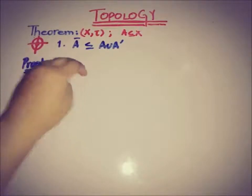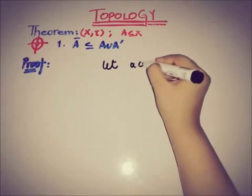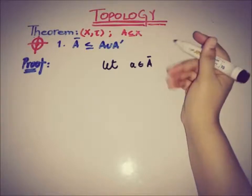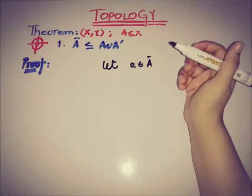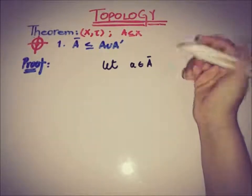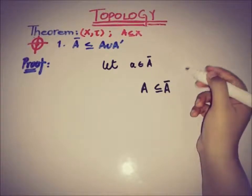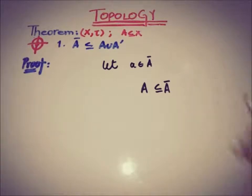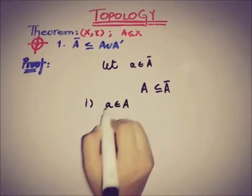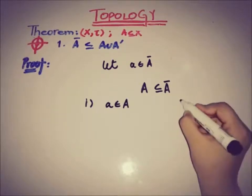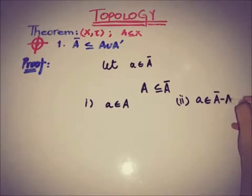Heading towards the first part: how we can prove that A union A-prime is a superset of A-closure. The target is A-bar is a subset of A union A-prime. So let x belong to A-bar — that is, x is a member of the closure of set A. We know that A-closure is the smallest closed set that contains A in it, and by definition A is a subset of A-closure. As x is a member of A-closure, there are two cases: first, x is also a member of the set A, and second, x is a member of the closure but not of the set A.